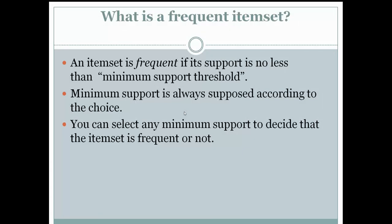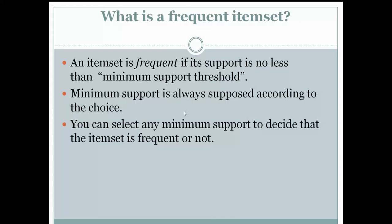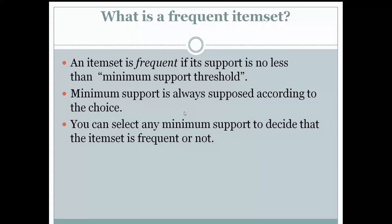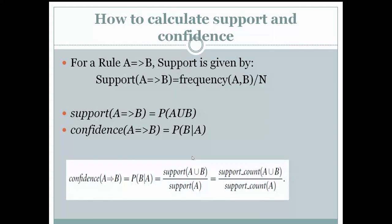A frequent item set is one whose support is no less than the minimum support threshold. The support value we calculate is compared with the minimum support threshold. If the value is less than the threshold, we remove that frequent pattern. We will get a clearer picture when we solve numerical problems using the Apriori algorithm. The minimum support is chosen according to your preference — you can select any value to decide whether an item set is frequent or not.